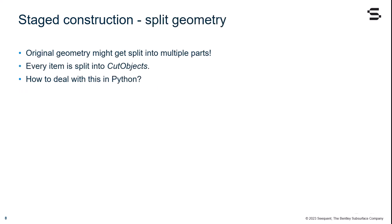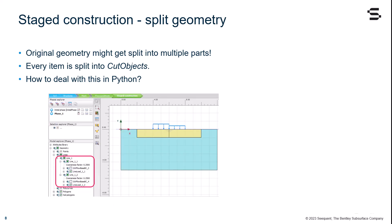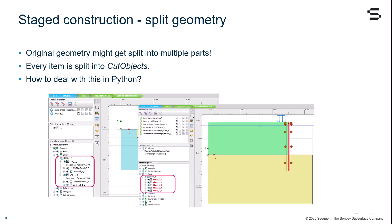In the previous example, you may have noticed that my foundation and the applied line load was being split by a vertical line. In fact, when switching to the so-called green modes - mesh, flow conditions, and staged construction - our original geometry might get split into multiple parts. We call this intersection, and it happens automatically when moving from blue to green modes. This means that potentially every item may be split into the so-called cat objects. The immediate question is how can we deal with this in Python, as via the GUI that is only a matter of some extra clicks.